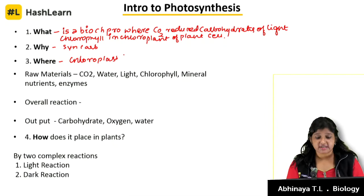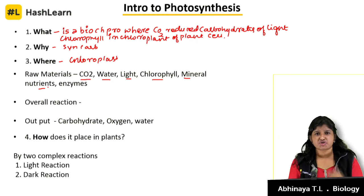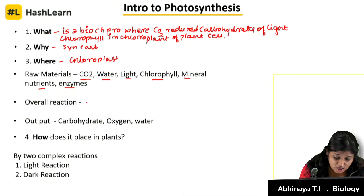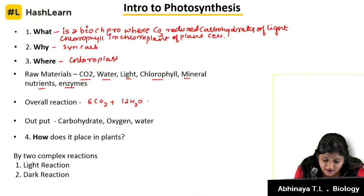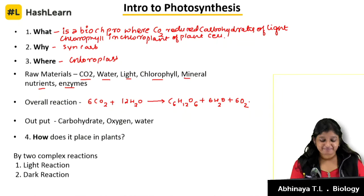What is the input given to the plant for photosynthesis? Carbon dioxide, water, light, chlorophyll, and mineral nutrients. You studied about the role of mineral nutrients in the mineral nutrition chapter and the emphasis of each element in helping photosynthesis. The overall reaction: the plant takes in 6 molecules of CO2 and 12 molecules of water, and gives out carbohydrates C6H12O6, 6 molecules of water, and 6 molecules of oxygen — all in the presence of light and chlorophyll.